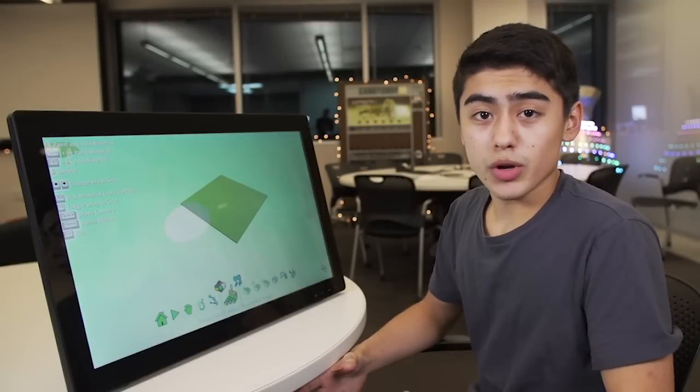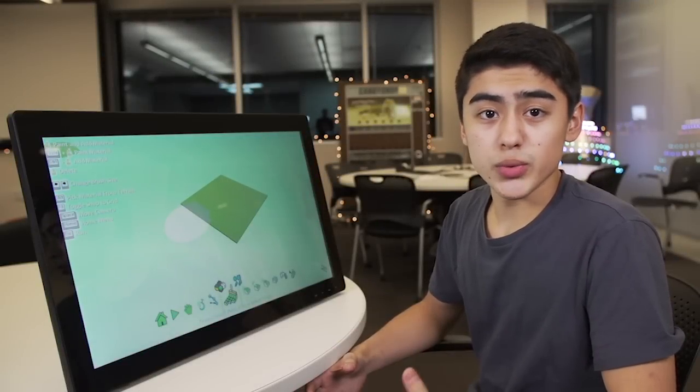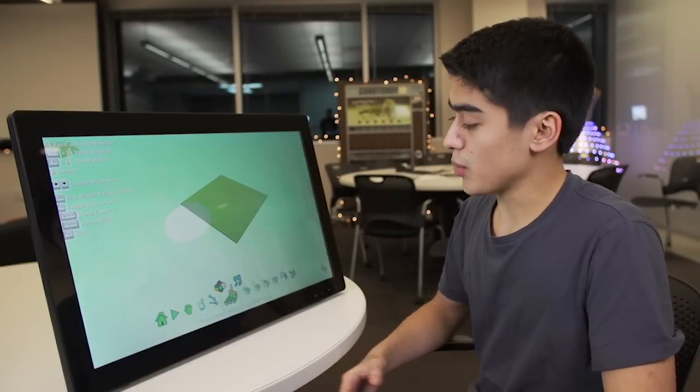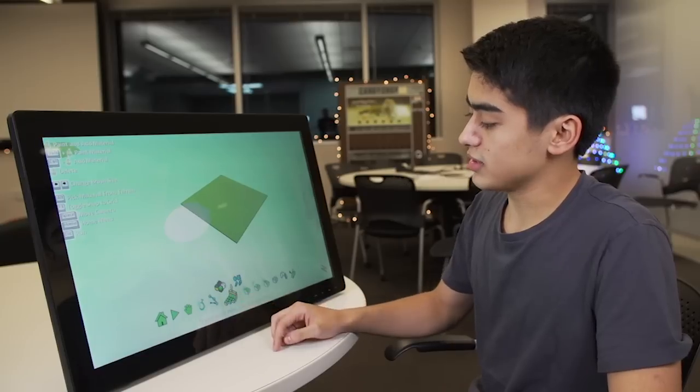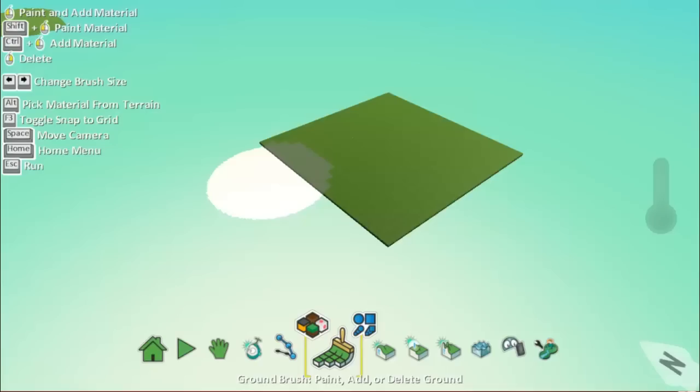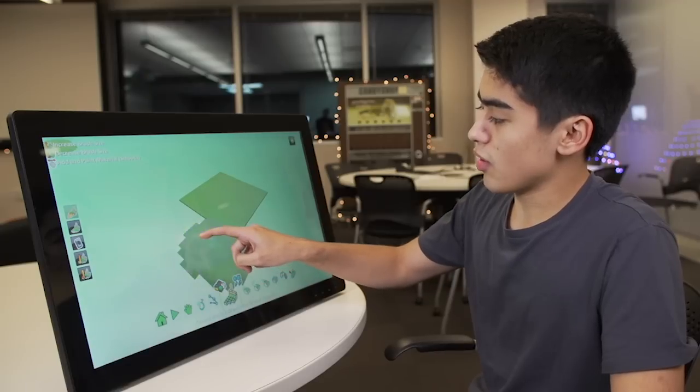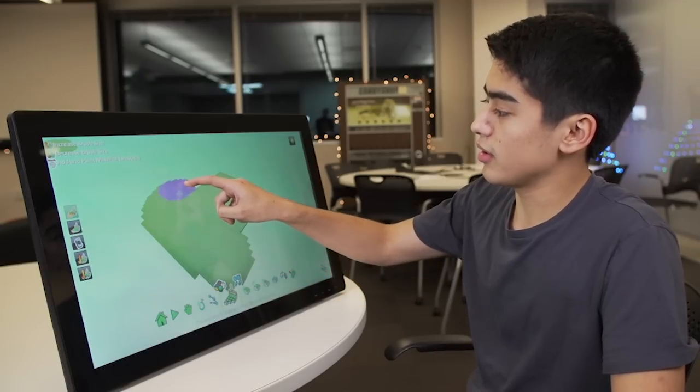So now that we know how to move around, what we're going to start doing is using the paintbrush tool to create our world. So what we're going to do first is down at the bottom we're going to select the paintbrush and then all we need to do is move our mouse and we can paint onto the world.